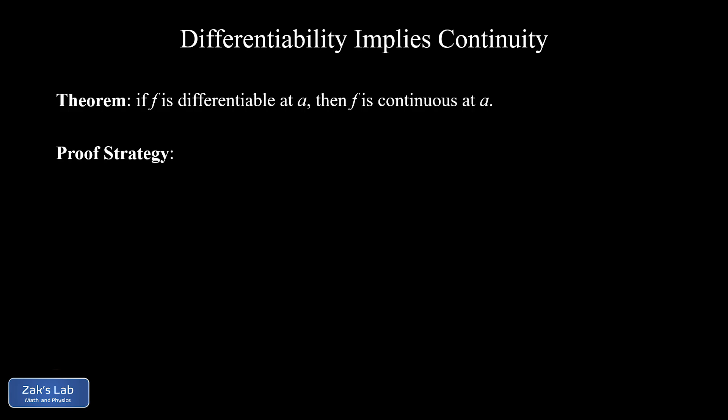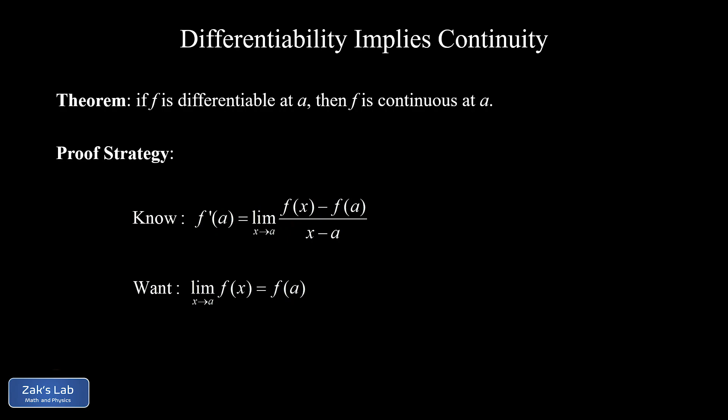We're trying to prove: if f is differentiable, then it's continuous. Let's think about proof strategy — what do we know and what are we trying to prove? What we know is that f prime of a is defined as the limit as x goes to a of f of x minus f of a over x minus a, and we're guaranteed that exists and equals some finite value. What we're trying to prove is that f is continuous at x equals a — that is, the limit of f of x as x goes to a equals f of a. This is totally equivalent to showing the limit as x goes to a of f of x minus f of a equals zero, which follows from the limit laws. So if we can show that numerator in the derivative limit goes to zero, we've proven continuity.